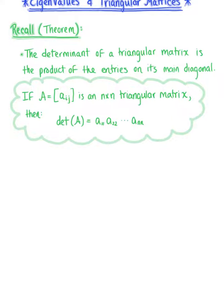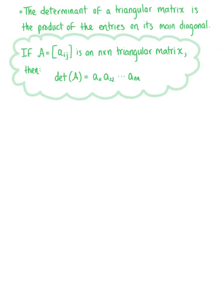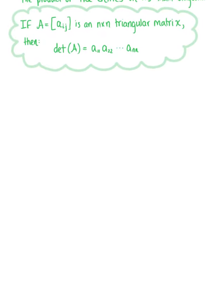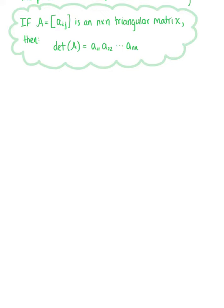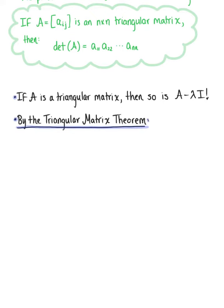We can now apply this theorem for triangular matrices to what we know about eigenvalues. If A is a triangular matrix, then so is the matrix A minus lambda times the identity matrix. And from our triangular matrix theorem, the determinant of matrix A minus lambda times the identity is just a product of the diagonal entries.